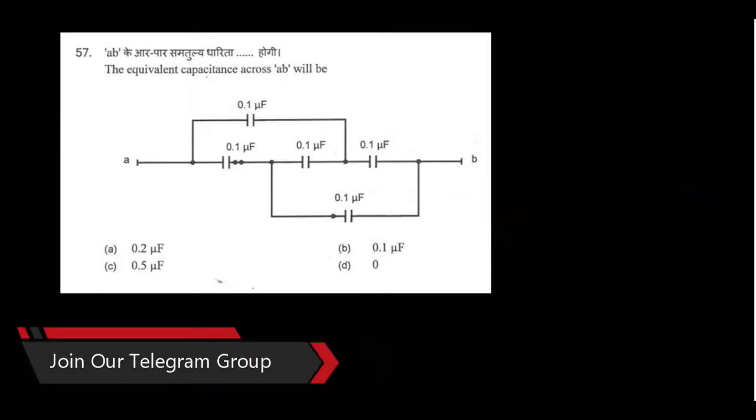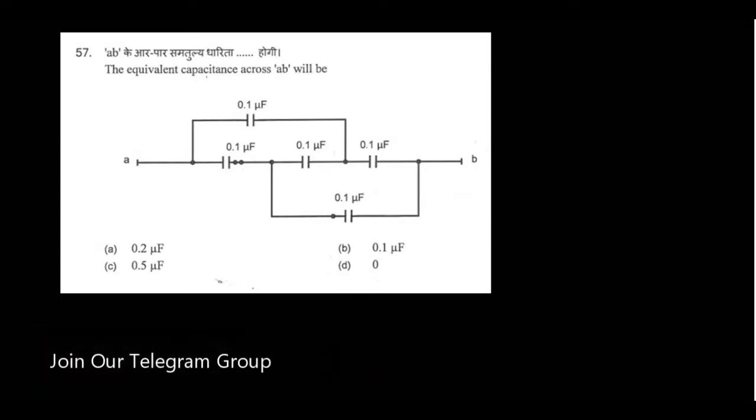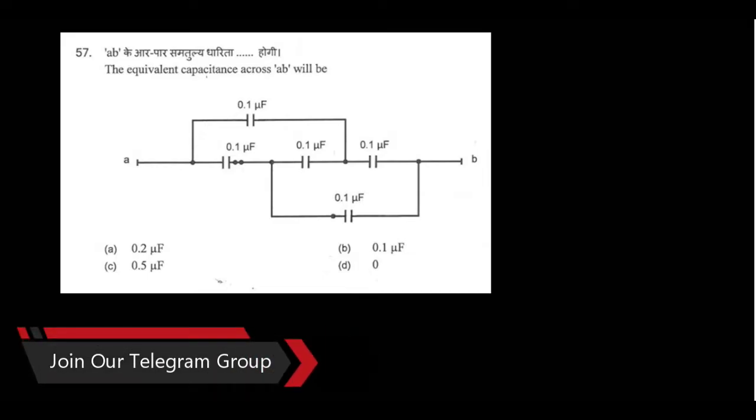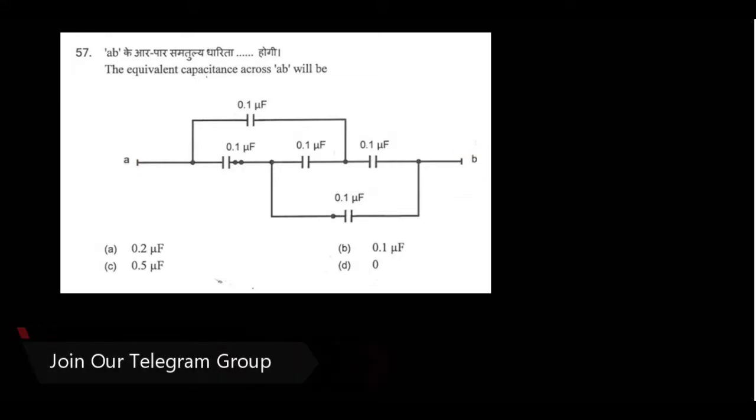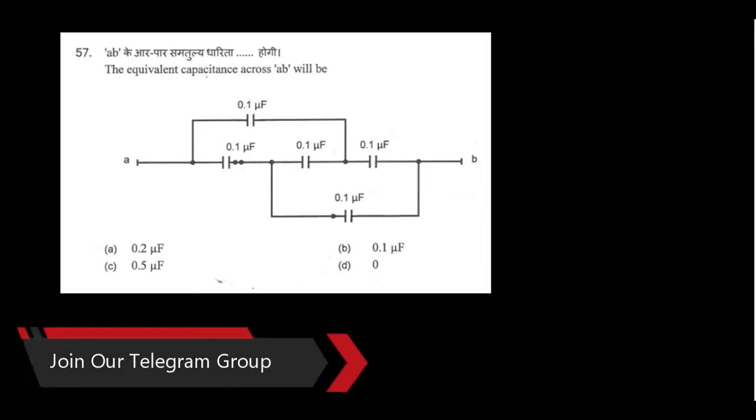So this is the given question. The equivalent capacitance across AB will be. We have to find the equivalent capacitance across A and B. Options are given. Let's see how to solve it.